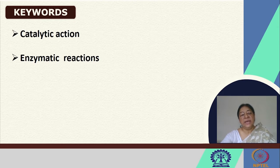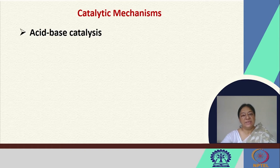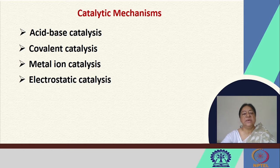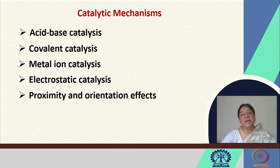We will look at catalytic actions and enzymatic reactions. To understand this, we need to know what kind of catalytic mechanisms are possible. These are acid-base catalysis, covalent catalysis, and metal-ion-based catalysis. Some or all of these involve electrostatic interactions and proximity and orientation effects, which we have visited in protein-ligand binding. Enzyme-substrate binding is a subset of protein-ligand binding, and recognition of the substrate by the enzyme to form the enzyme-substrate complex is an important event in catalysis.